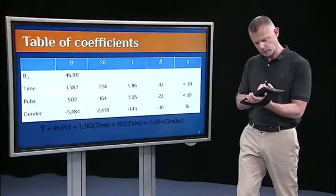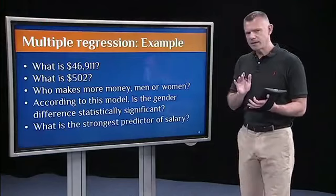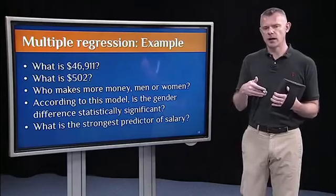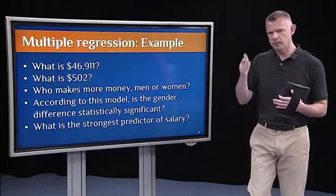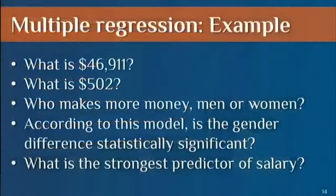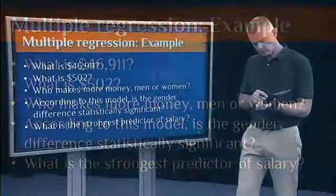Now let's get to those questions that I talked about. I'm asking these just to get you to think carefully about this output and what these coefficients really mean. So what is 46,911? What is 502? If you look back at the table, you could ask who makes more money, men or women? According to the model, is that difference between men and women statistically significant? What's the strongest predictor of salary?